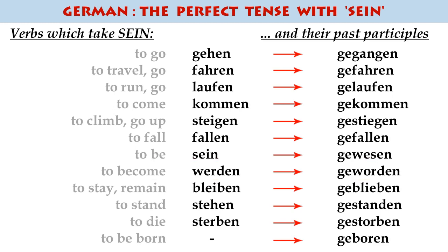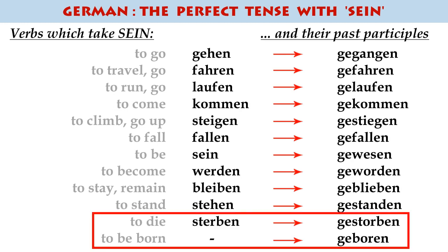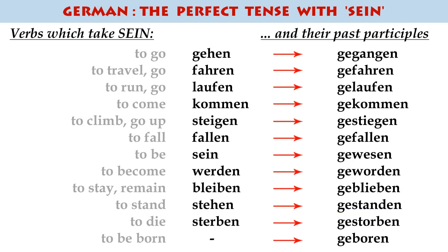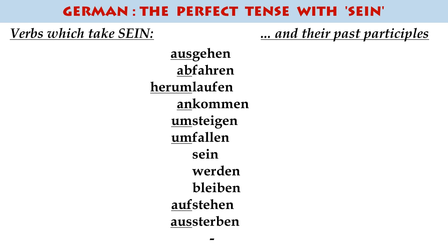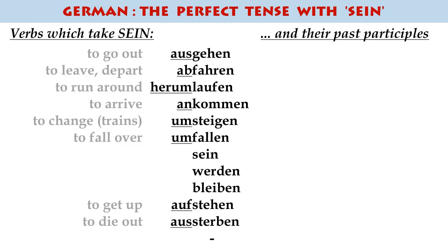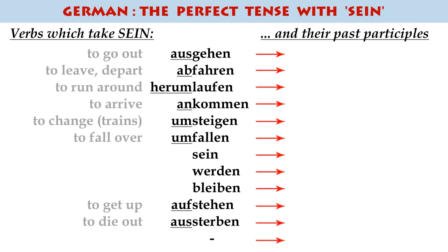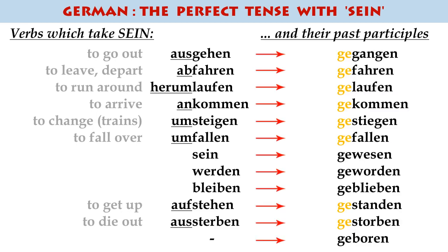And on a more metaphysical level, you've also got verbs here including dying and being born, which obviously represent transition from one state to another. You will also encounter a number of these verbs at GCSE and in common usage in a form with a prefix on the front — that's a separable verb. As I discussed in my video on the perfect tense, the prefix gets pushed a little bit further away, and the ge element is often pushed in between it as well.